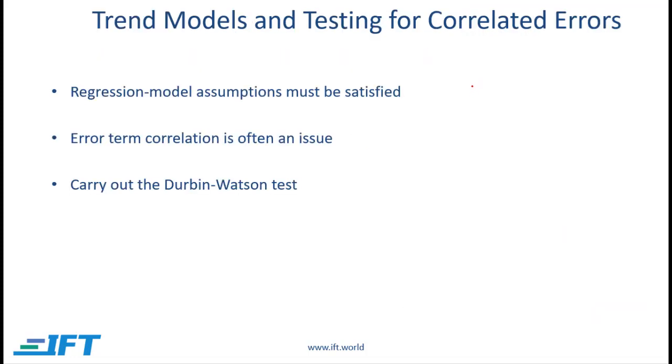The trend models that we are talking about are regression models and therefore regression model assumptions must be satisfied. But the challenge is that when working with these models error term correlation is often an issue. In other words the error terms are correlated with each other which means that we have serial correlation or autocorrelation and that is a problem. So how do we test for this?